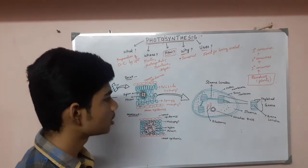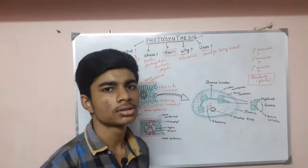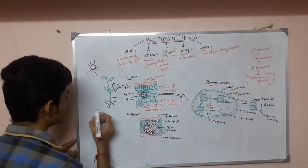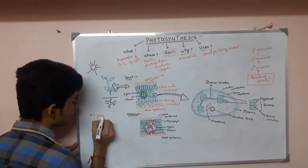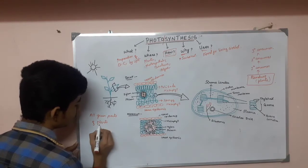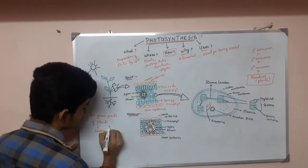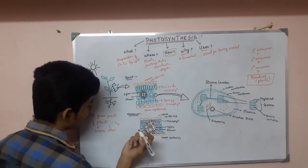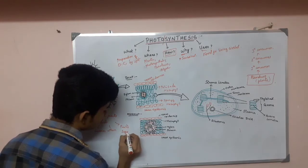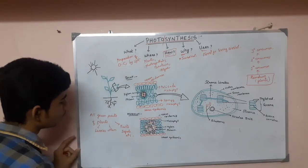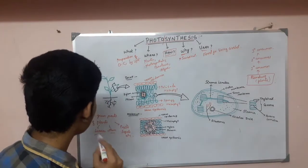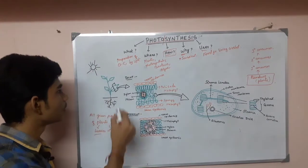So let us see what photosynthesis is, what are the steps involved in photosynthesis, and where does photosynthesis occur in plants. Photosynthesis occurs in all green parts of plants — that is mainly leaves, and also stem, fruits, and sepals.